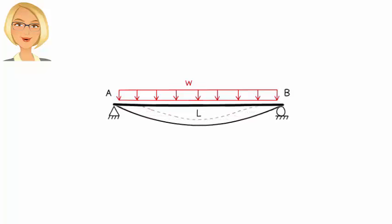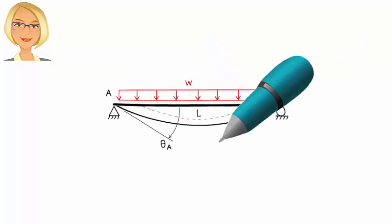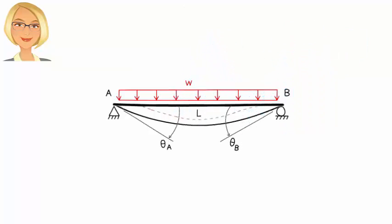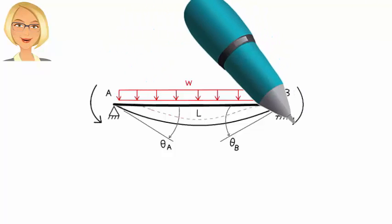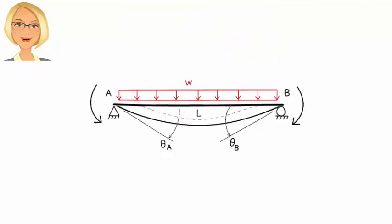Let's denote the end rotations as theta-A and theta-B, which we can easily calculate, say, using the virtual work method. But we know that the real beam has a zero rotation at A and B. So, what we need is a couple of moments, one placed at A and one placed at B, that would undo these end rotations.